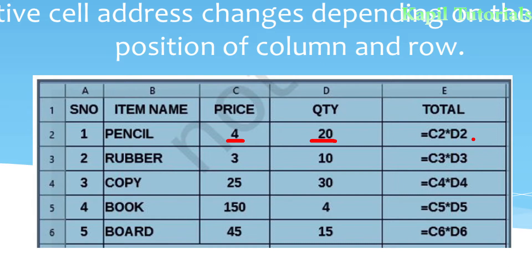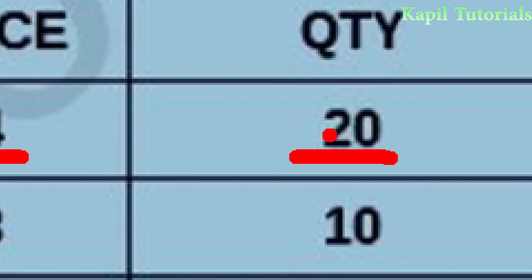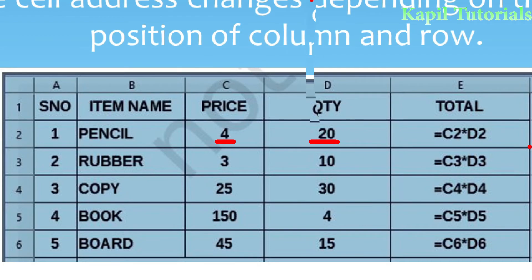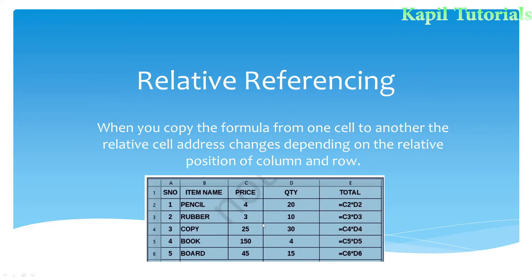To save time, we drag the formula by clicking. When we drag it automatically, it changes — from C2 it converts into C3, and where it was D2 it converts to D3. Then it converts into C4 and gradually increases. So when it increases in this way, we call this relative reference. In relative reference formulas, when it is copied, it changes itself.